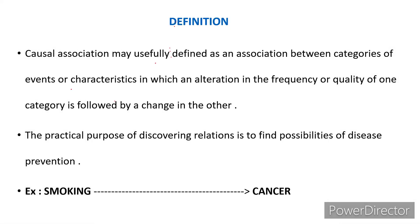To begin with the definition, a causal association is an association between categories of events or characteristics in which an alteration in the frequency or quality of one category is followed by a change in the other. The practical purpose of discovering these relations is to find possibilities of disease prevention.